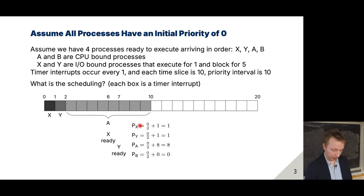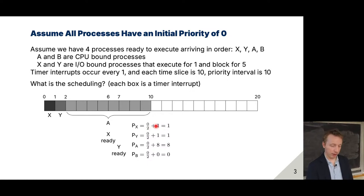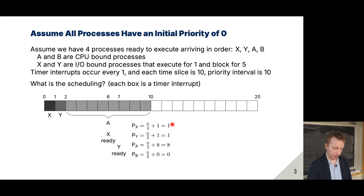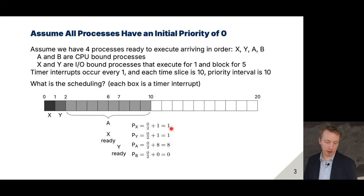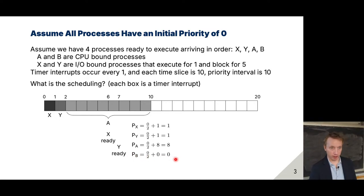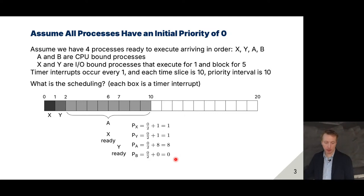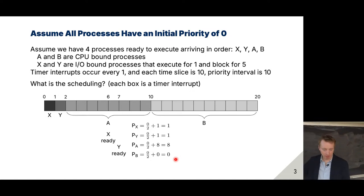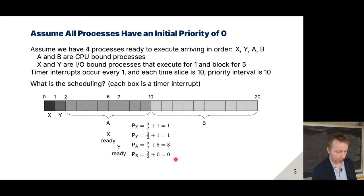When we recalculate priorities, the initial priority of all processes is zero. We just add however long they ran in the last interval. In the last 10 time units, X ran for 1, Y ran for 1, and A ran for 8. So new priorities are: X=1, Y=1, A=8, B=0. Now B has the lowest number — highest priority over everything else — so we would execute B for the next 10 time units, then recalculate again and keep going.